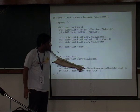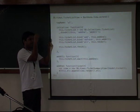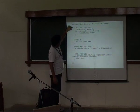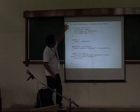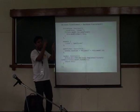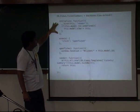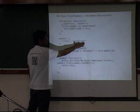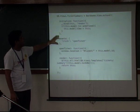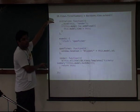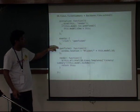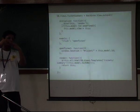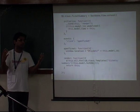Every time addOne is called, it initializes the TicketSummary view, passes it a model, and appends it to the DOM. The interesting thing is we're not worrying about the actual class name or ID of the element. When you do dollar this.el, the selector is already scoped to that UL tag, so everything is happening inside that UL. You don't have to worry about where it's placed on the page, what its ID is — it doesn't matter anymore. You can just worry about the particular component you're working on, not the page as a whole.